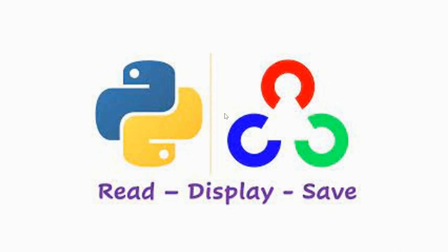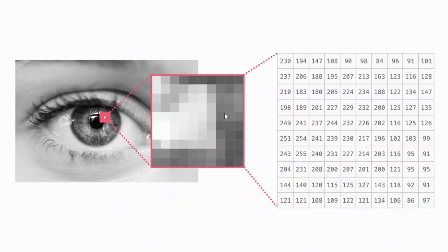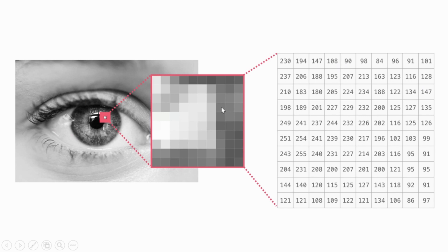The NumPy array represents the image as a matrix of pixel values. For example, a grayscale image has only one color channel. You can see an example of a grayscale image on the left-hand side — a black and white image is basically a grayscale image. On the right-hand side you can see the pixel values of the corresponding image. On the other hand, a colored image is an RGB image and has three color channels: one for red, one for green, and one for blue.